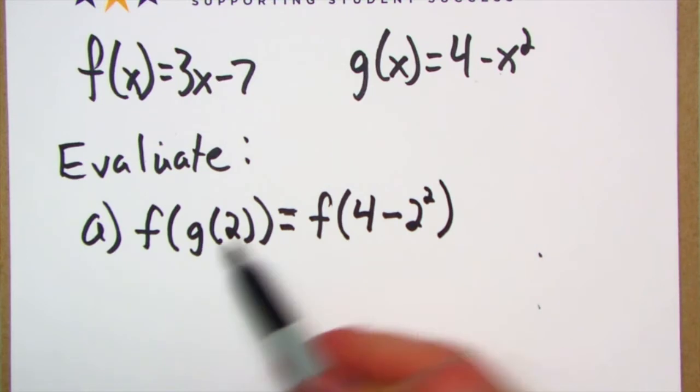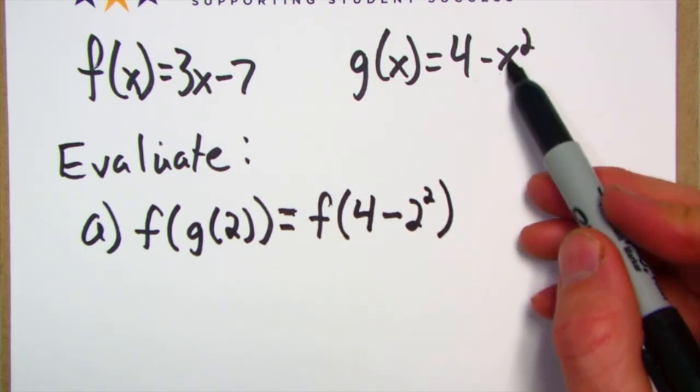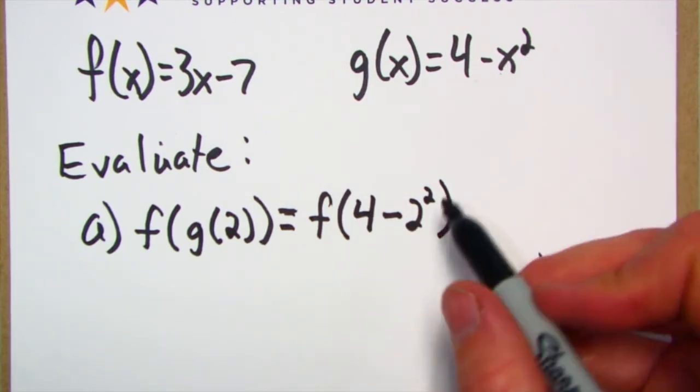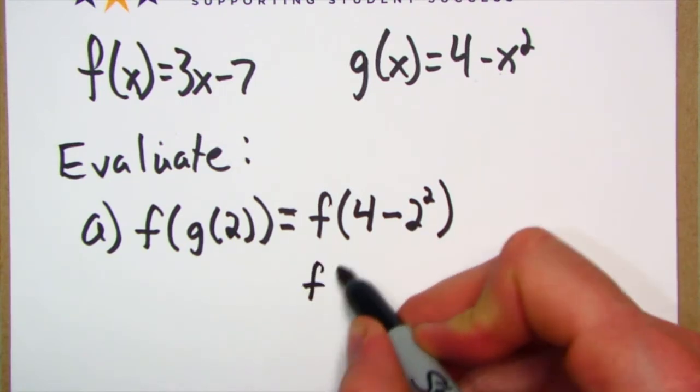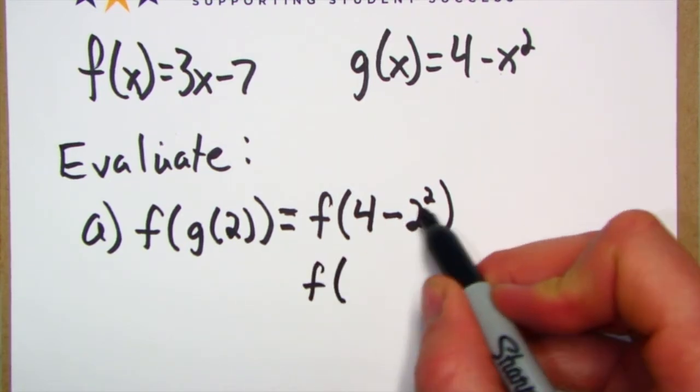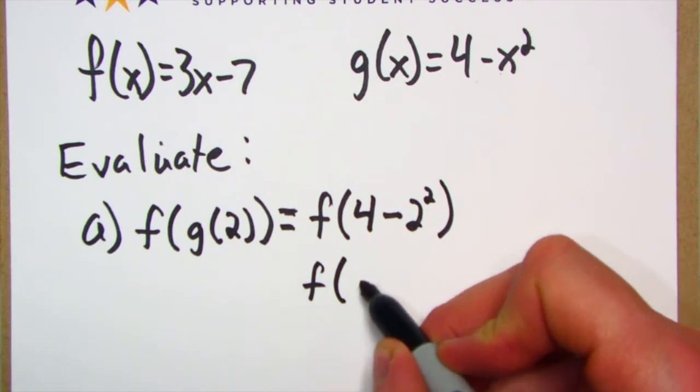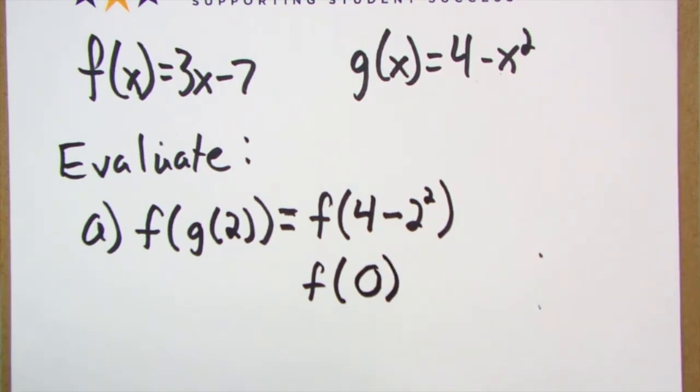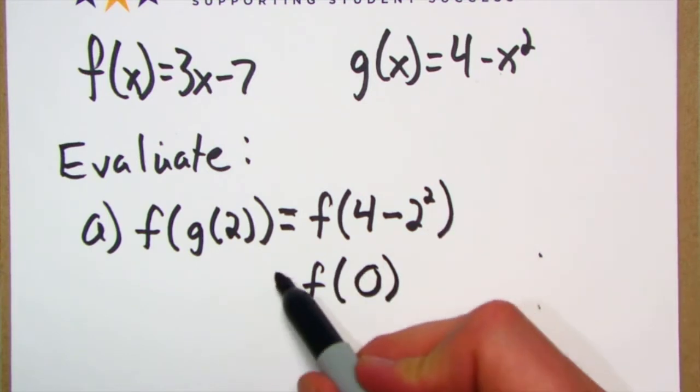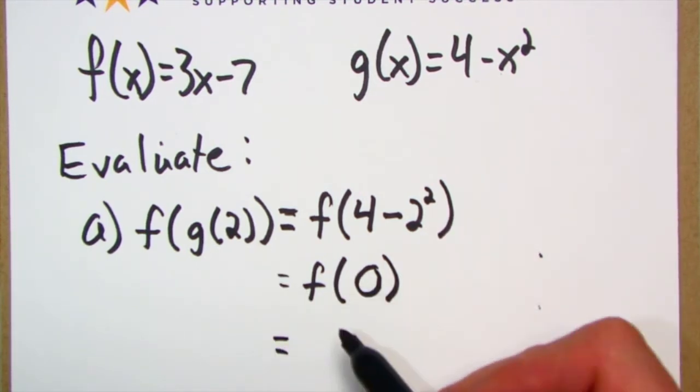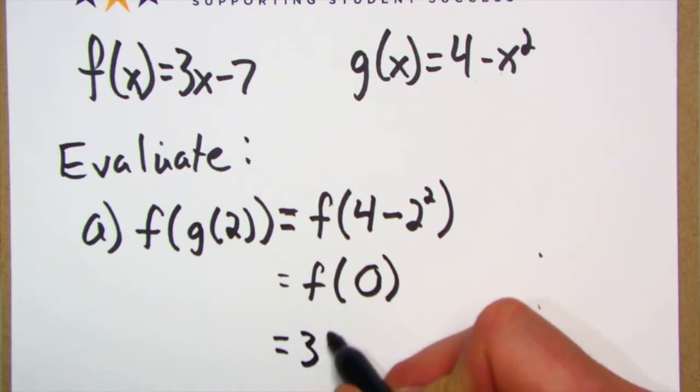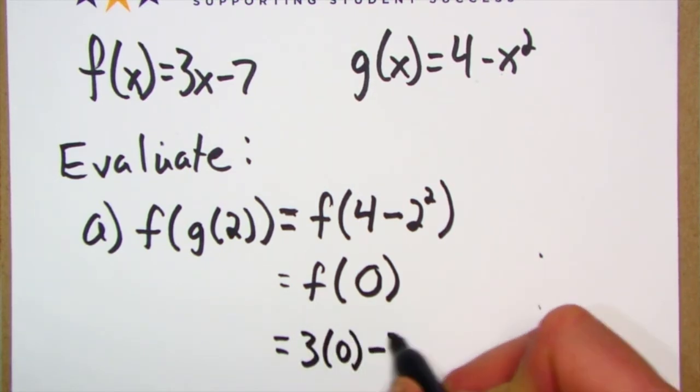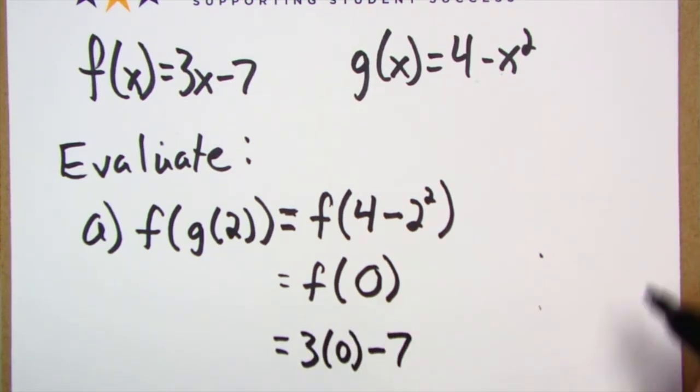Right, because g of 2 is putting a 2 in for the x in the g function. All right, so this is going to be f of 4 minus 4, which is f of 0. Okay, f of 0 is going to be 3 times 0 minus 7.